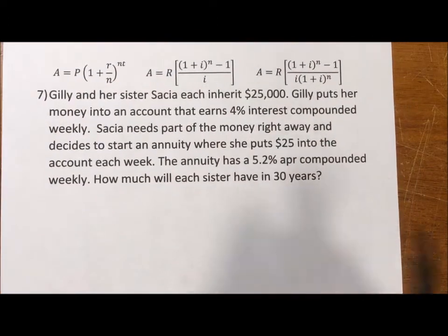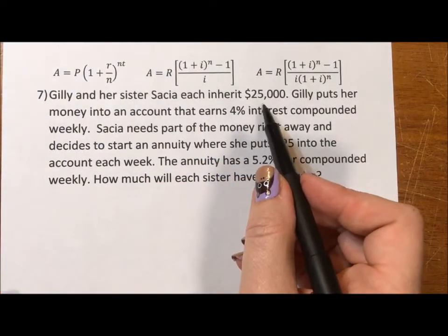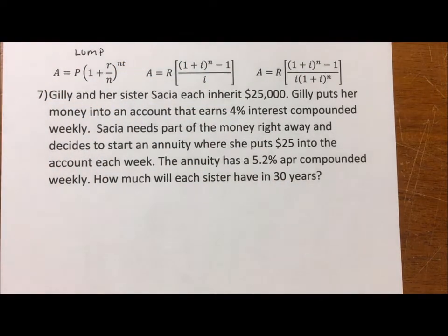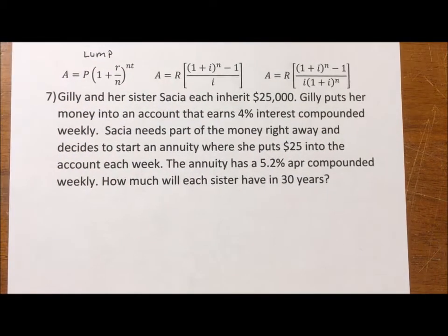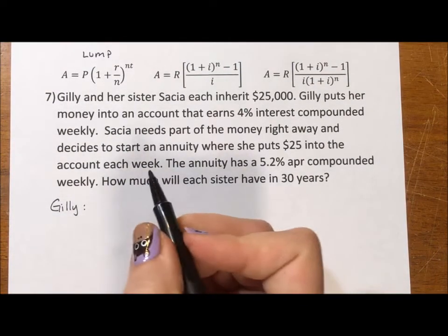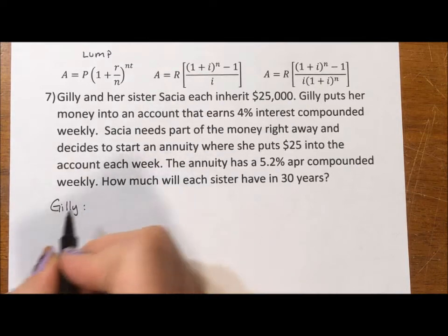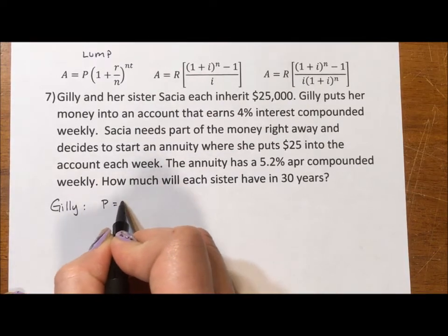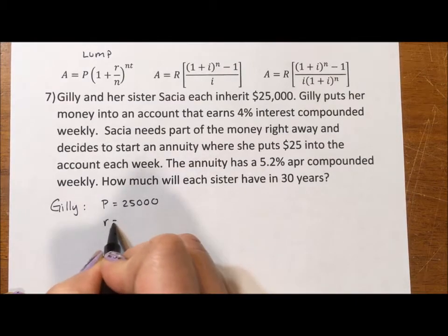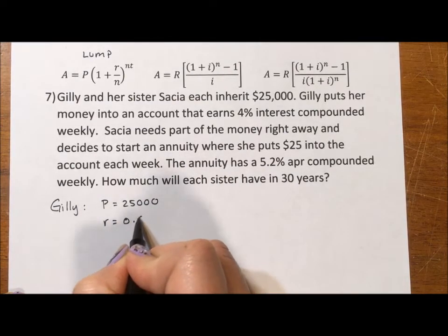Okay, so for Gilly, she has a lump sum and this equation right here is your lump sum equation. This is what you use when it's one and done. So for Gilly, let's see, the principal for both of them is going to be $25,000. The rate for Gilly is 4 divided by 100, which is 0.04.